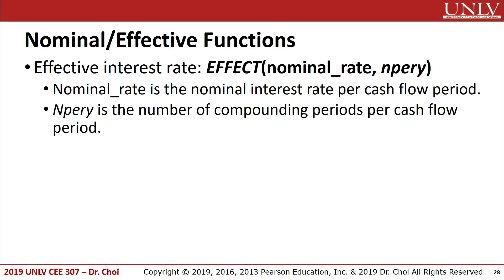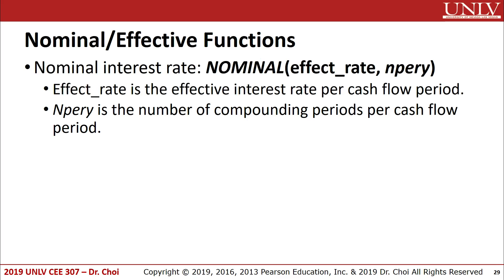Here is the formula for effective interest rate: =EFFECT(nominal_rate, npery), where nominal_rate is the nominal interest rate per cash flow period, and npery is the number of compounding periods per cash flow period. Here is the formula for nominal interest rate: =NOMINAL(effect_rate, npery), where effect_rate is the effective interest rate per cash flow period and npery is the number of compounding periods per cash flow period.